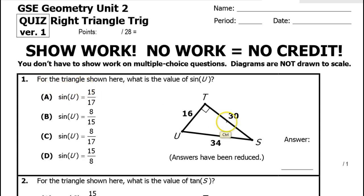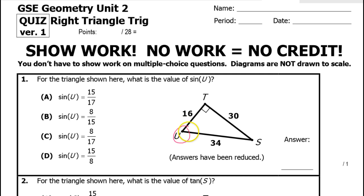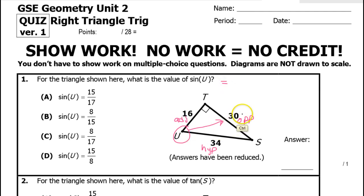For problem number one, we have a triangle shown and we are supposed to find sine of u — not the value of angle u, just the sine of u. So we employ the definition. Because we're talking about angle u, we circle it. The hypotenuse is across from the right angle, the opposite leg is across from angle u, and the adjacent leg is right next to u. Sine is opposite over hypotenuse, so that's 30 over 34, which reduces to 15 over 17.